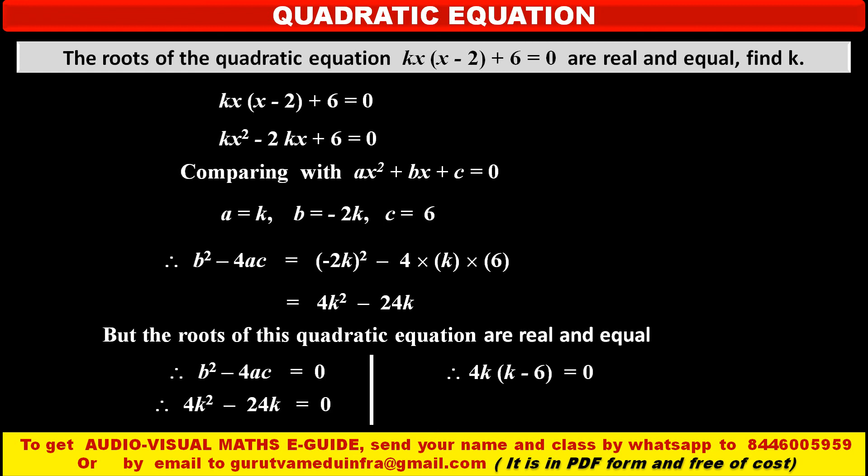So factorizing this, we get 4k in bracket k minus 6 is equal to 0. So by solving this, we get 2 values of k. One is k is equal to 0 and other is k is equal to 6.